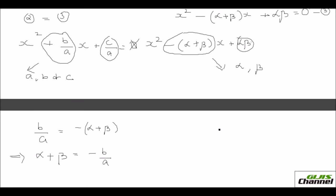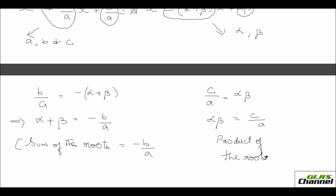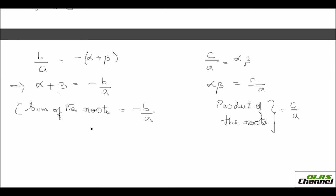Now taking the constant terms: c over a equals alpha times beta. So the product of the roots equals c over a. To summarize: the sum of the roots, alpha plus beta, equals negative b over a, and the product of the roots, alpha times beta, equals c over a. These are the relationships between the roots and the coefficients, where b and a are the coefficients of the equation.